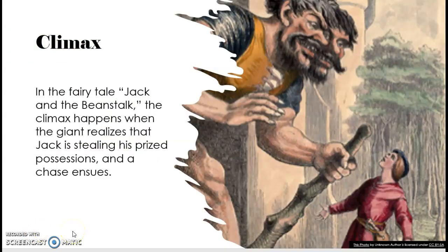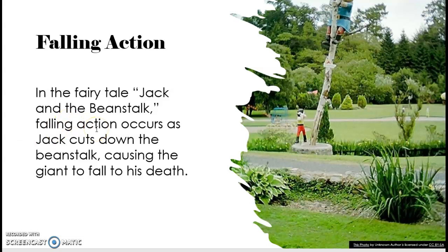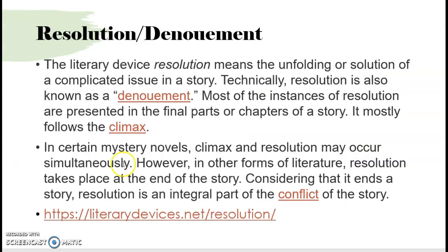In Jack and the Beanstalk, the climax happens when the giant realizes that Jack is taking his treasures — stealing his stuff. Then we have the falling action, which occurs after the climax as that moment of crisis starts to resolve. The falling action in Jack and the Beanstalk occurs when Jack decides to cut down the beanstalk. He's gotten home almost safely, but the giant is still chasing him, so Jack cuts down the beanstalk to save himself.